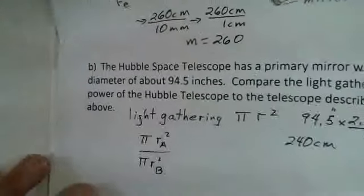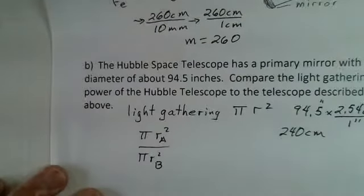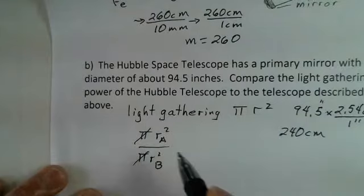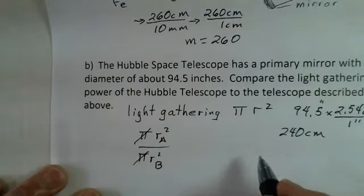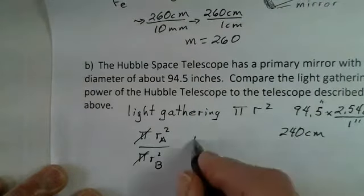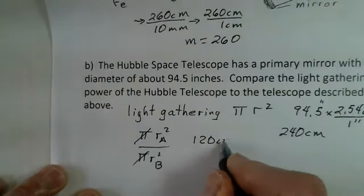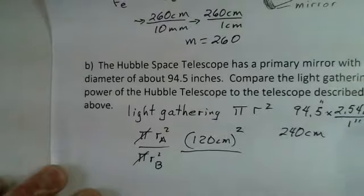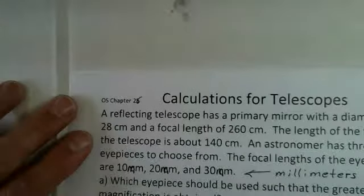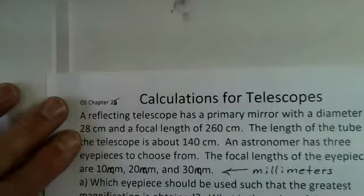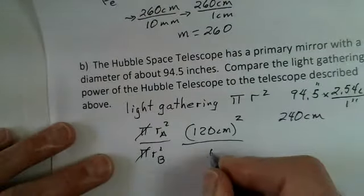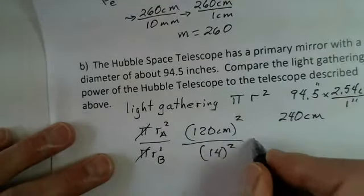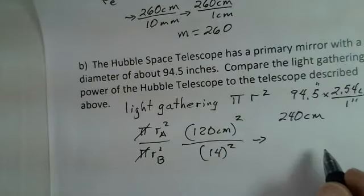We calculate πr² for telescope A divided by πr² for telescope B to compare light gathering ability. The π's cancel. The Hubble's radius is 120 centimeters, squared. The amateur telescope has a diameter of 28 centimeters, so its radius is 14 centimeters. Let's do the calculation: (120cm)² divided by (14cm)².